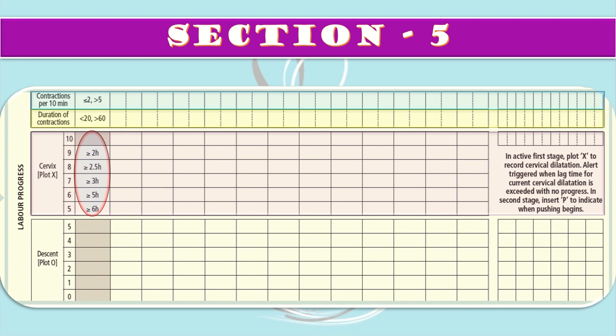In the cervical plot chart, use X to record cervical dilatation in the active first stage. In the second stage, insert P to indicate when pushing begins. For descent of the head, assess by abdominal palpation during the first stage every four hours. In the second stage, assess descent by abdominal examination to evaluate the woman's effectiveness of pushing.